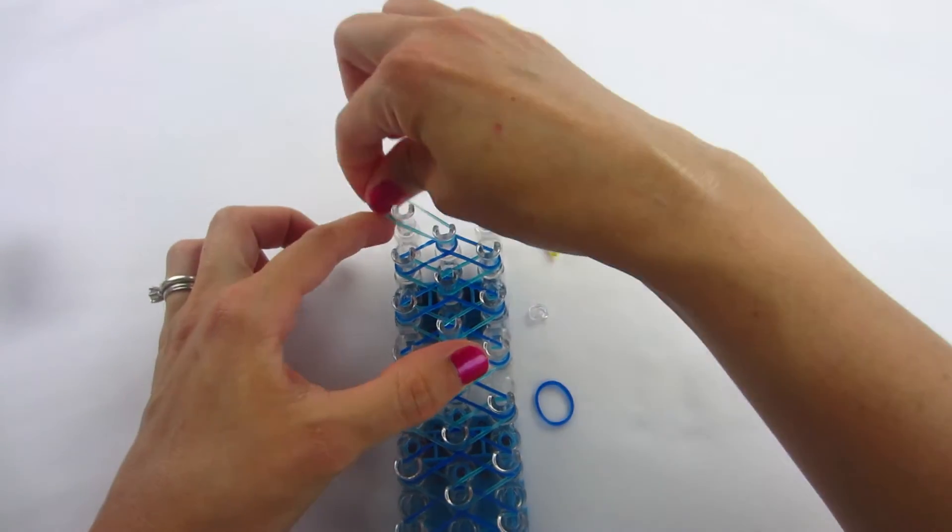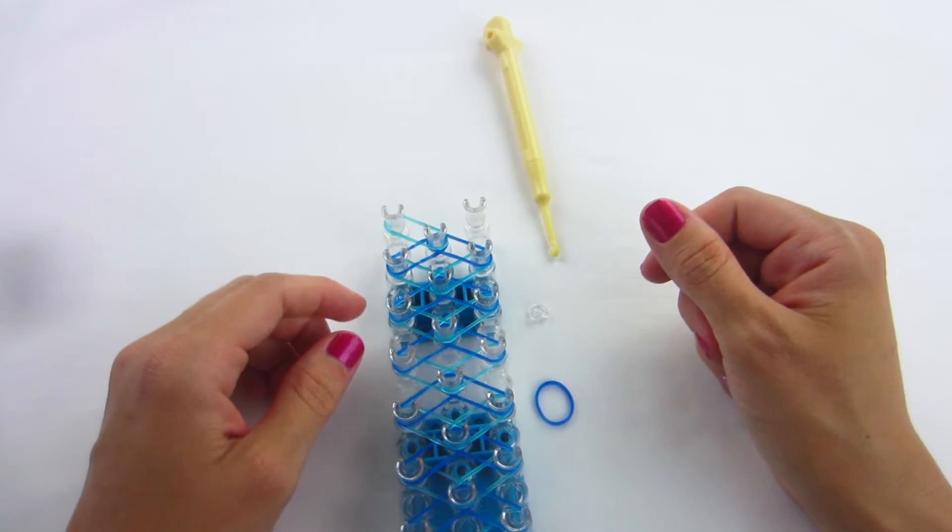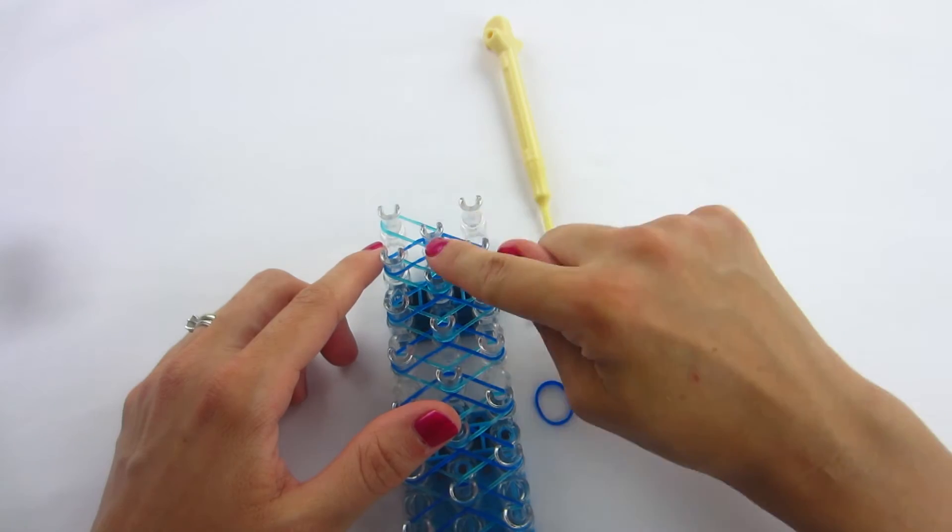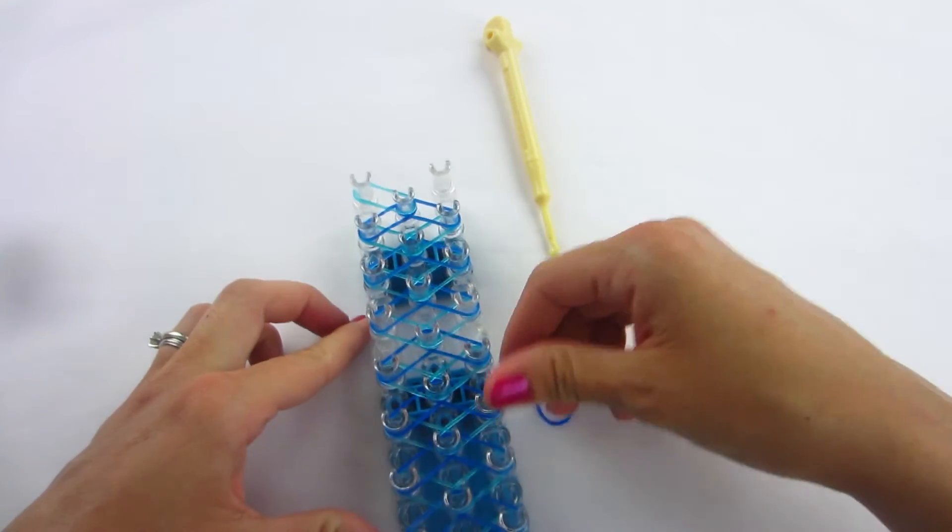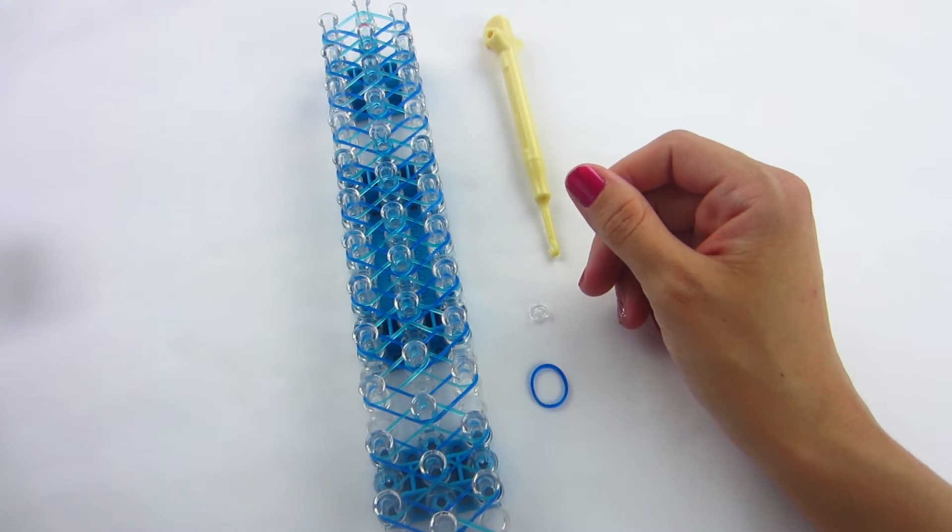And put your last aqua band just up and over to the left. You don't need the last one over to the right. Sorry. All right, we are ready to turn our loom around and we are going to start looping our bands.